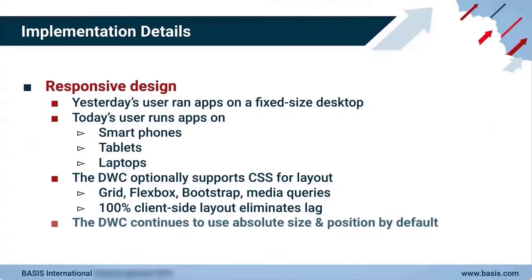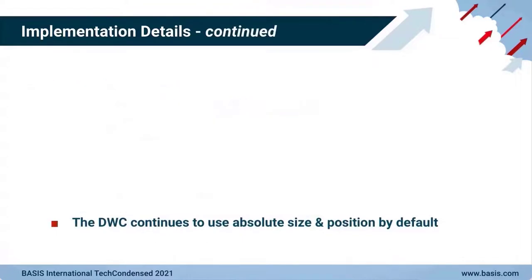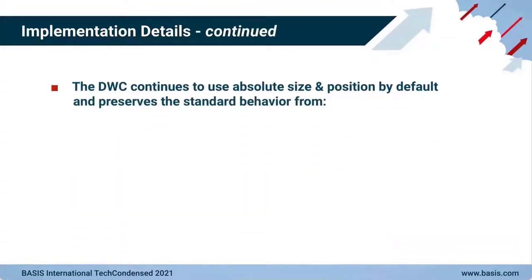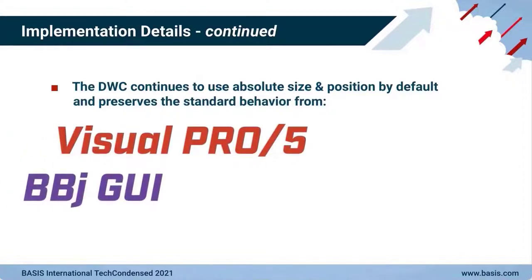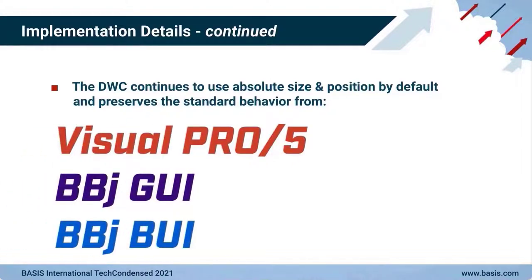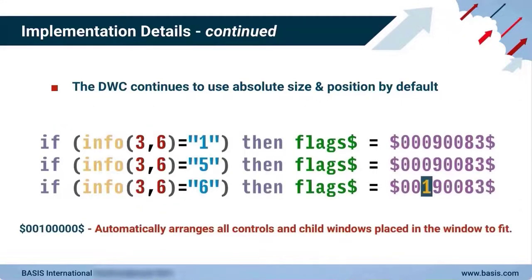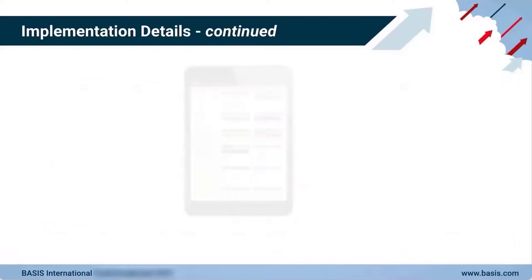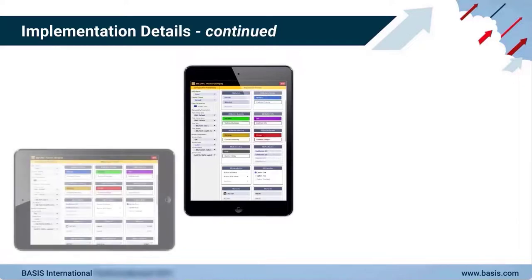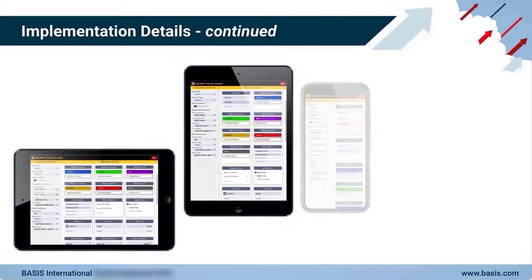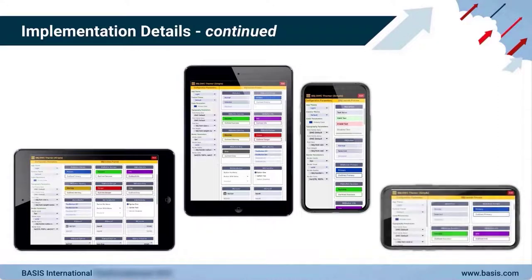By default, the new client continues to use absolute sizes and positions, preserving the standard BBJ behavior from Visual Pro 5, BBJ GUI, and BBJ BUI. But when developers are ready to build a responsive app, they can set a window creation flag to take full control of the sizing and positioning with CSS. They can then size controls based on the available screen space and even define multiple layout patterns based on the screen size or orientation, making it possible for apps to dynamically respond and adapt to the viewport.